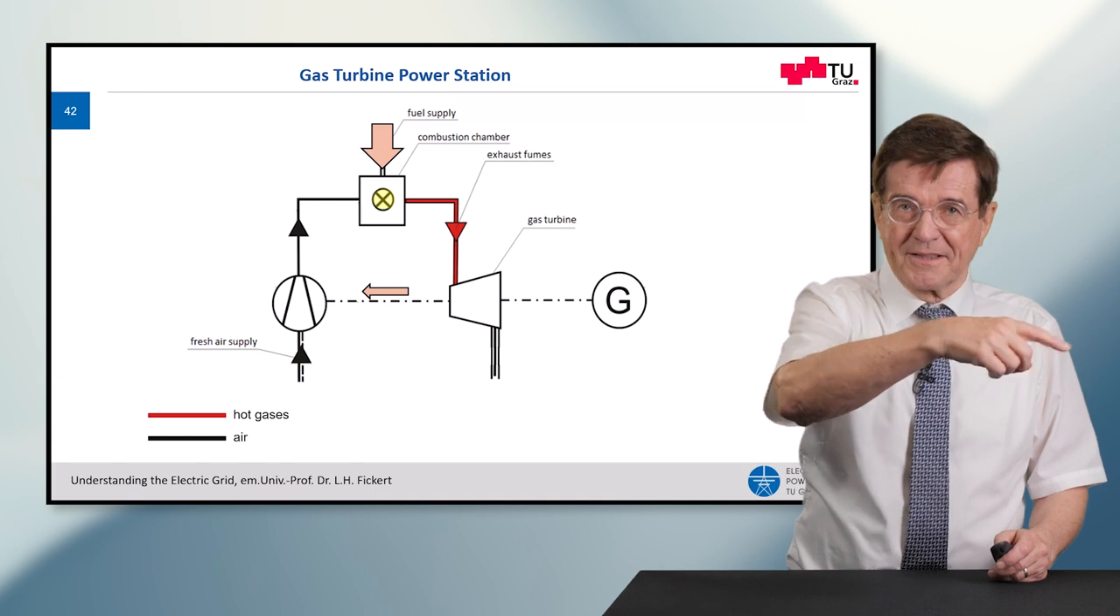Here the fuel is added, it is ignited and it burns, and out of this combustion chamber come hot gases. These hot gases go through the gas turbine, which in turn again turns the compressor. This is something like a feedback loop, and from this gas turbine, the hot gases are released in most cases into the free air, into the atmosphere.